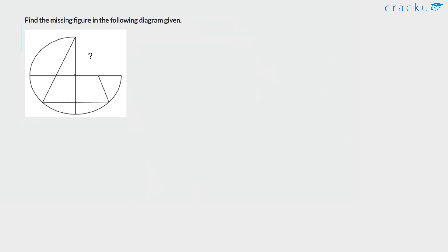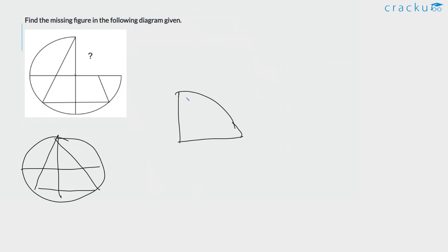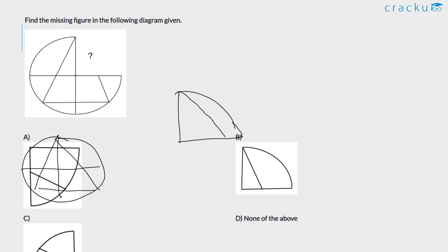Find the missing figure in the following diagram. Observe the figure carefully — it is a circle divided into four parts, and a triangle has been drawn inside it. Therefore, the missing part should be a quarter circle with a line. The answer is option B.